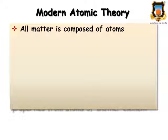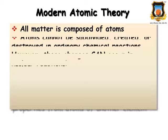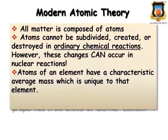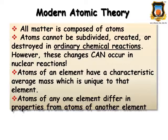In 1808 Dalton published a new system of chemical philosophy in which he proposed the following postulates: All matter is composed of atoms. Atoms cannot be subdivided, created or destroyed in ordinary chemical reactions. However, these changes can occur in nuclear reactions. Atoms of an element have a characteristic average mass which is unique to that element. Atoms of any one element differ in properties from atoms of another element.